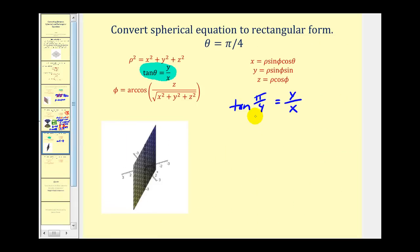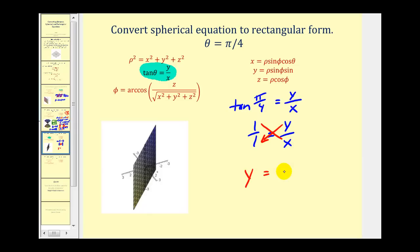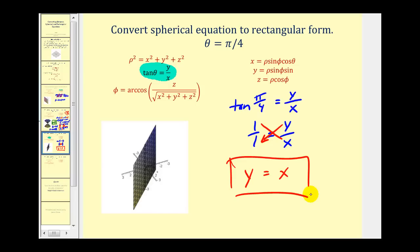Let's write it as one over one. So we have one over one equals y over x. Now we have a proportion and we can just cross multiply, so y times one equals one times x, or x. So the equation y equals x graphed in the x, y, z coordinate system would produce a plane, and this would be the equation in rectangular form.